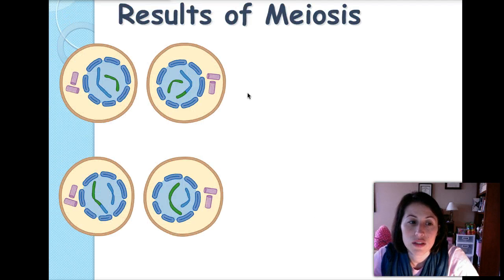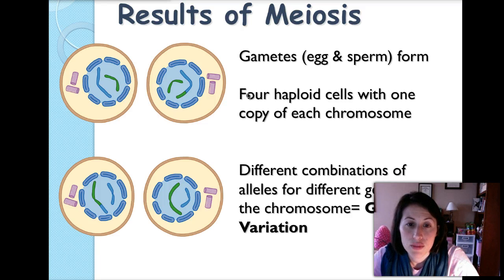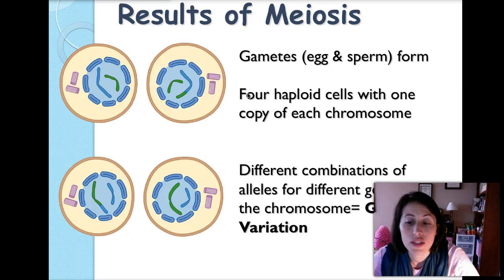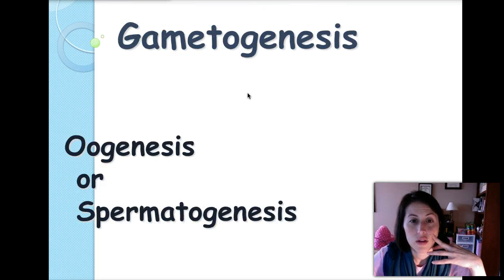The result is gamete formation — egg cells or sperm cells. You get four haploid cells with one copy of each chromosome in each of them. The different combinations of alleles for different genes along the chromosome contribute to genetic variation, which is really important.